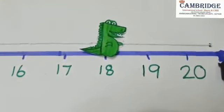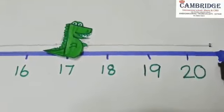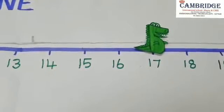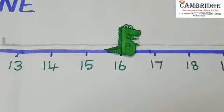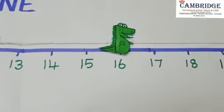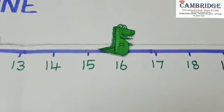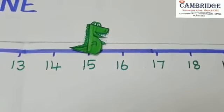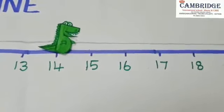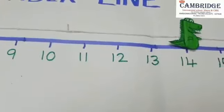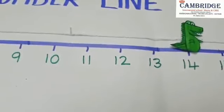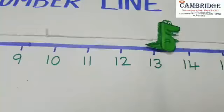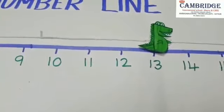Before 19, 18. Before 18, 17. What comes before 17? 16. Before 16, 15. Before 15, 14. What comes before 14? 13.